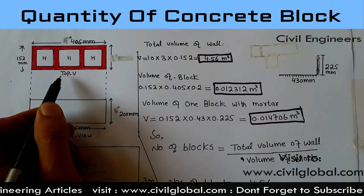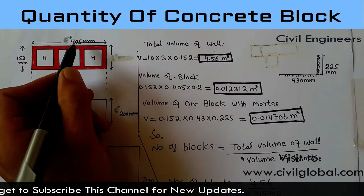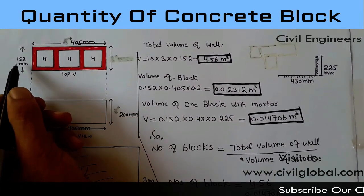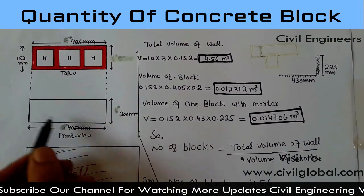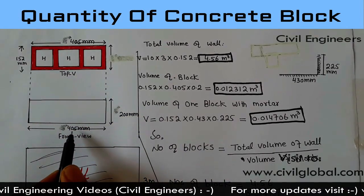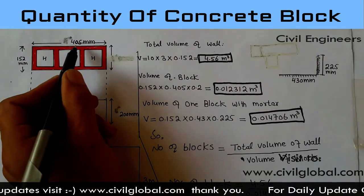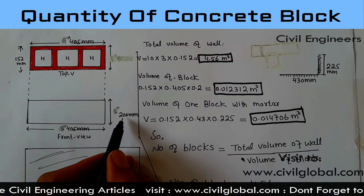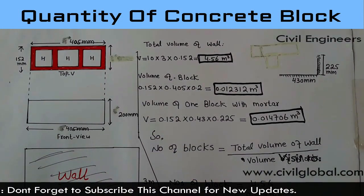This is the top view for the concrete block, which length is 405 millimeter and the width of this block is 152 millimeter. This is the front view for the block, which length is 405 millimeter and the height of the block is 200 millimeter.